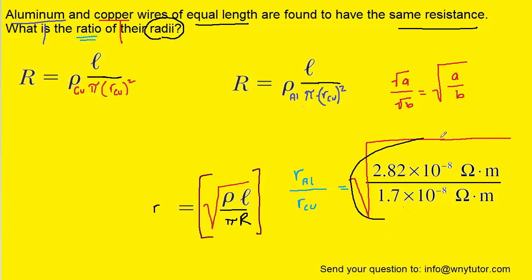And when you plug this whole thing into your calculator, don't forget the square root, you should get approximately 1.3 as your answer. And that is indeed the correct answer for the ratio of the aluminum wire radius to the copper wire radius.